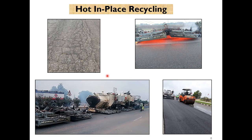In hot in-place recycling, we heat the bituminous surface through an infrared process, and this heated material is excavated and transported to another machine at the site itself. Deficient materials are then added — either aggregate, bitumen, or both — plus a rejuvenator or without, and then it is laid on the road.